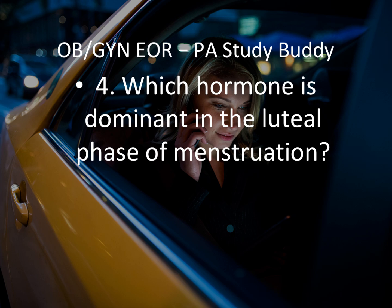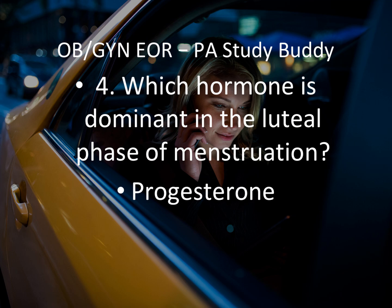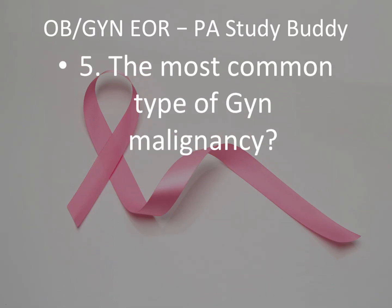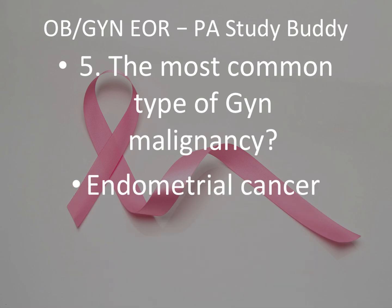Question 4: Which hormone is dominant in the luteal phase of menstruation? They'll give you a stem with different dates and ask about different hormones. The hormone dominant in the luteal phase is progesterone. Question 5: The most common type of GYN malignancy — that would be endometrial cancer. They'll give you a stem with different cancer types and ask which is most likely the cause of GYN malignancy.